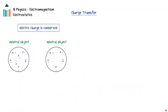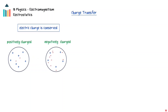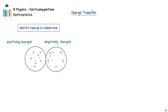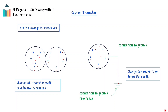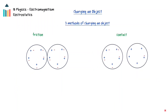Electric charge must be conserved. If charge is transferred from one object to another, the two objects will have an equal electric charge but opposite signs. When charged conductors come in contact with each other, charge will transfer until an equilibrium is reached. If a charged conductor is connected to the Earth, charge will flow to or from the Earth. The Earth provides an infinitely large reservoir that can accept excess charge from the object or provide electrons to the object. The three ways in which charge can be transferred are friction, contact, and induction.